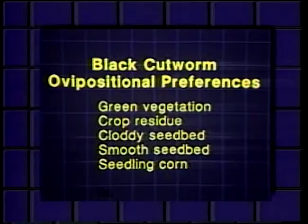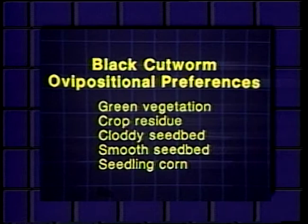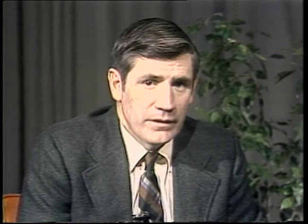This is a ranking of the available locations for cutworm moths to lay eggs. If given a choice, moths will lay most of their eggs where new grasses and weeds are beginning to grow. Most of the remaining eggs are laid where undisturbed crop residue is present. Very few eggs are laid on bare soil, regardless of how rough or smooth the soil surface is. It's also interesting to note that cutworm moths are not attracted to seedling corn, provided there are no grass or weed seedlings growing in the field.